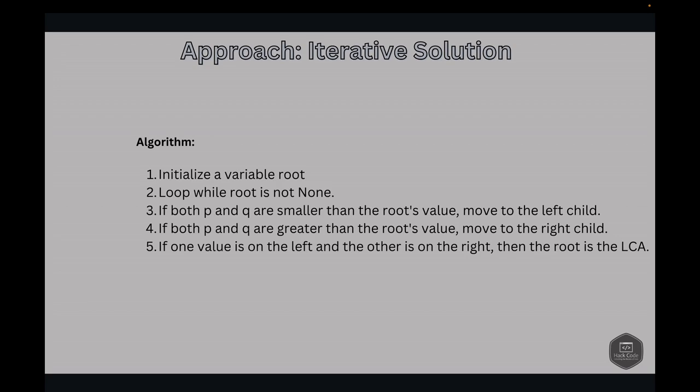Now let's look at approach 2: the iterative approach. We start by initializing a variable pointing to the current root node, then loop while root is not None. If both P and Q are smaller than the root's value, we move to the left child. If both P and Q are greater than the root's value, we move to the right child. If one value is on the left and the other on the right, root is the LCA, so we break the loop and return the root.